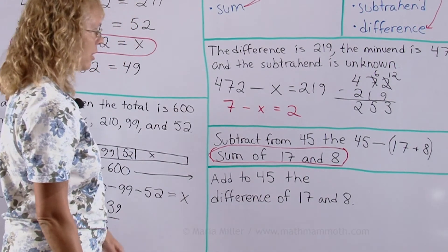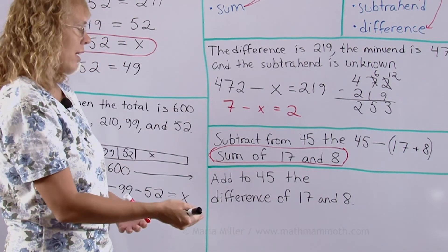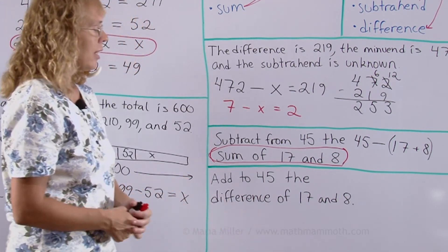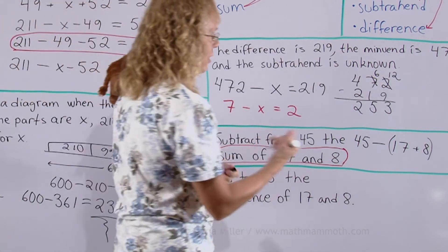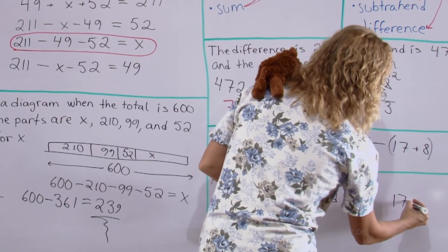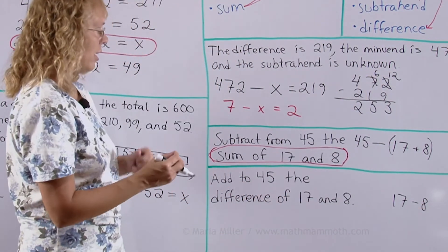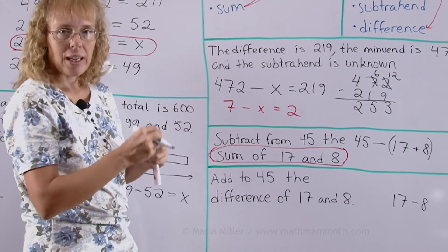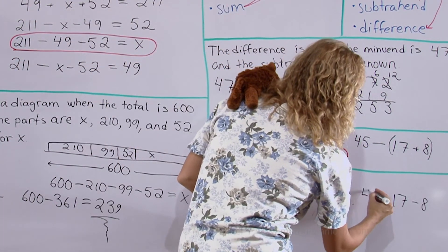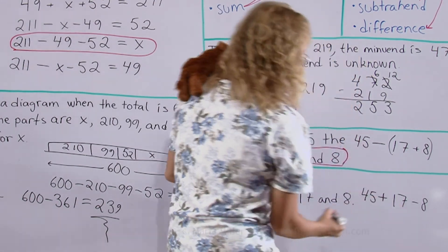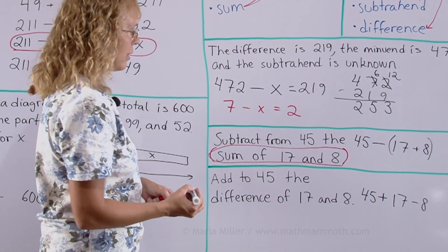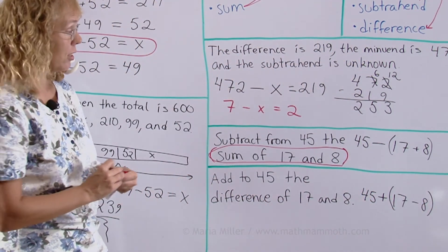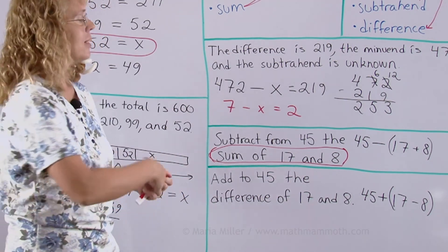Add to 45 the difference of 17 and 8. Add to 45, that means 45 plus. The difference of 17 and 8 is of course 17 minus 8. So we have 17 minus 8 there. And then we have 45 and addition. It sounds like we need to write it 45 plus what follows. So we write 45 plus. And again, let's put parentheses here to make sure that we actually calculate the difference first. And only after that we add 45 plus that difference.